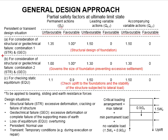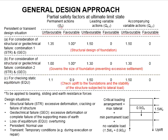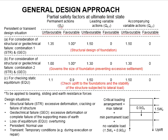As for design combination two, the factors are between 1.0 and 1.3 for the permanent and variable unfavorable actions, and 1.0 and 0 for the favorable permanent and variable actions.